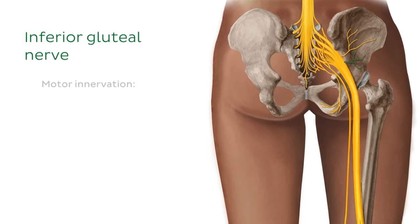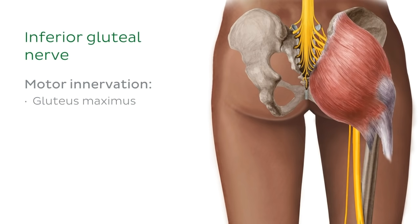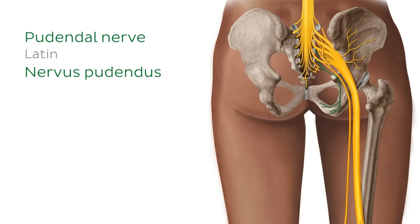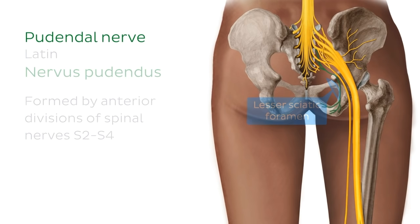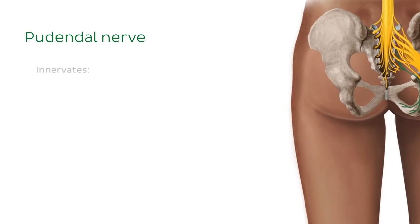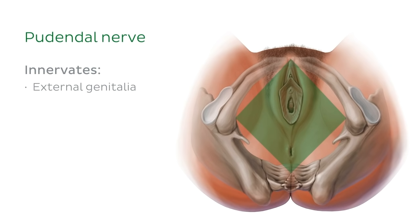The inferior gluteal nerve provides motor innervation to the gluteus maximus muscle. The next branch of the sacral plexus is the pudendal nerve, which is formed by the anterior divisions of spinal nerves S2 to S4. The route of the pudendal nerve is a little unusual — it leaves the pelvis via the greater sciatic foramen and then enters the perineum via the lesser sciatic foramen. This nerve gives rise to branches that innervate the external genitalia, the skin of the perineum, and the muscles of the perineum.